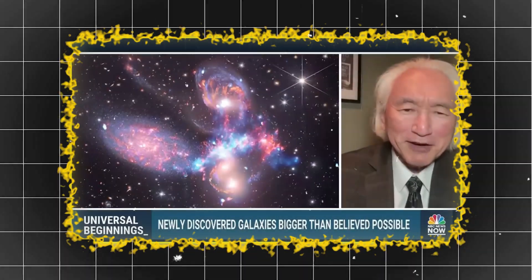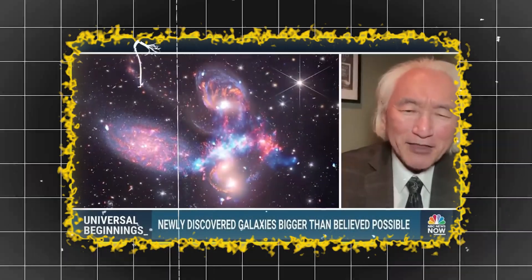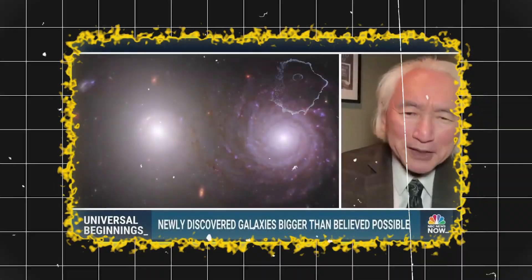The James Webb Telescope has identified six galaxies that exist half a billion years.